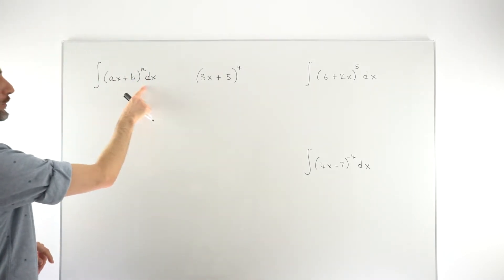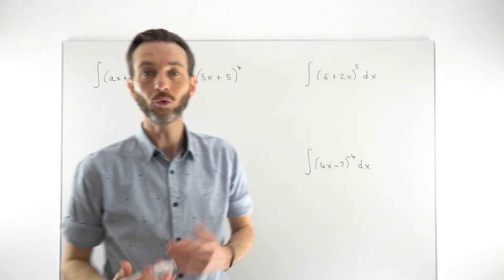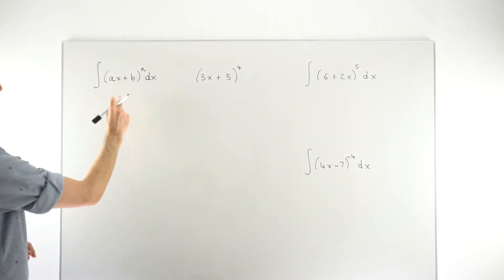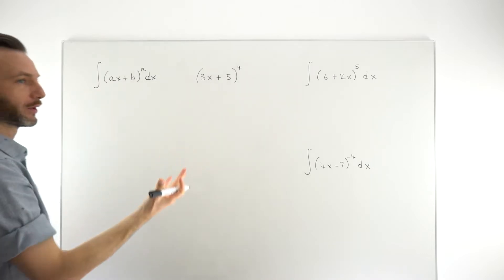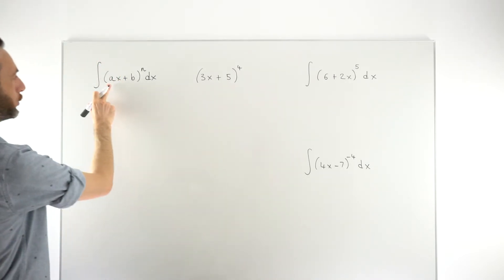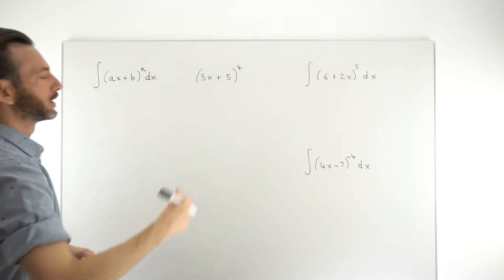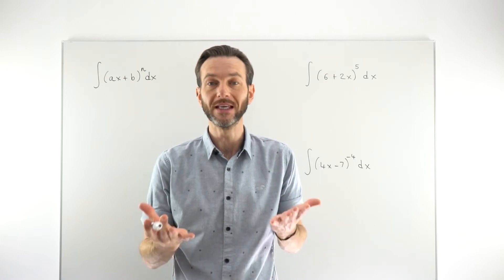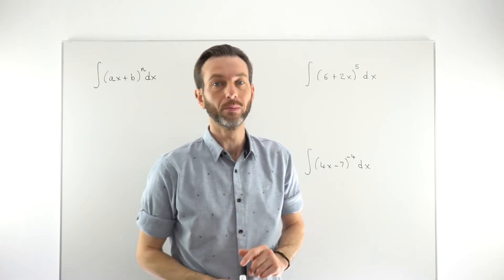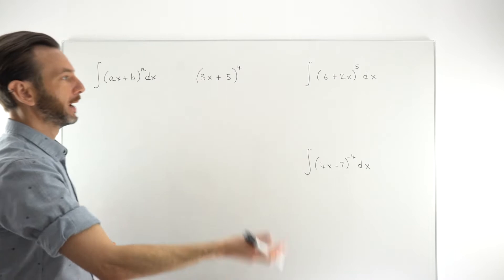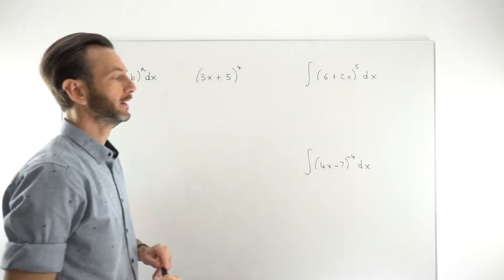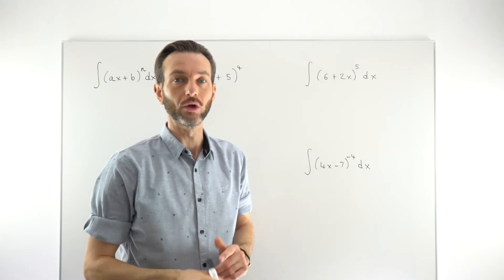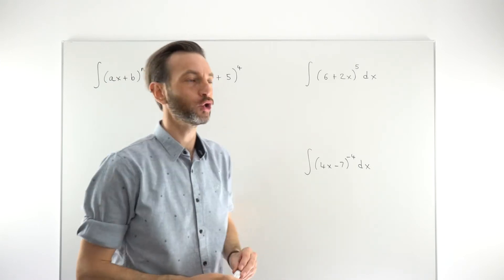This is the format we're looking for. We already know how to solve these using a substitution — generally we let u equal ax plus b, change the integral into a different format that we know how to easily integrate using the power rule, then work backwards to get the final answer. There's quite a lot of work in that. It turns out we can use the reverse chain rule as a kind of alternative to the substitution method.